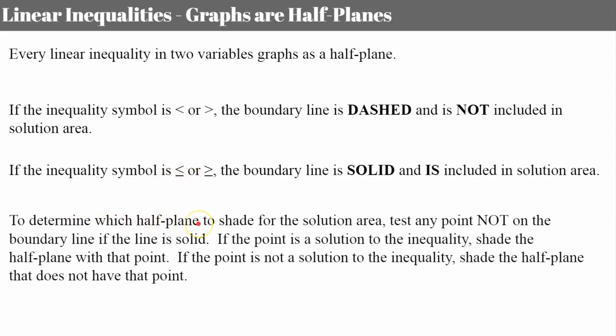To determine which half of the plane to shade after graphing your boundary line, you do a test point. Plug the test point into the linear inequality — if the statement comes out true, that ordered pair is part of the solution area, so shade the side the test point is on. If the result is false, that ordered pair is not part of the solution set, so shade the opposite side of the boundary line.